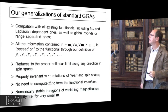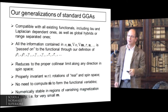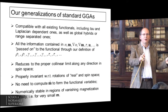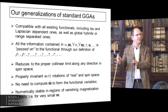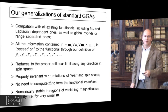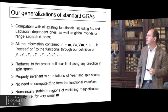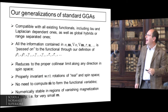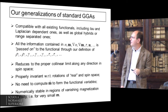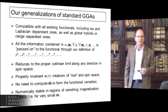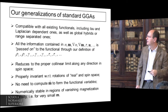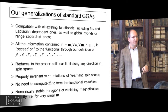What happens? First of all, if you define the variables this way, you take wholesale all the standard existing functionals and use them for non-collinear calculations — including hybrids, global hybrids, range-separated hybrids, and meta-GGAs. All the information contained in the non-collinear density is encoded in some way and passed on to the functional through this other definition of the gammas. It reduces to the proper collinear limit along any direction — not just z or x or y. It is properly invariant. M̂ is out of the picture; you get something numerically stable when the magnetization goes to zero.